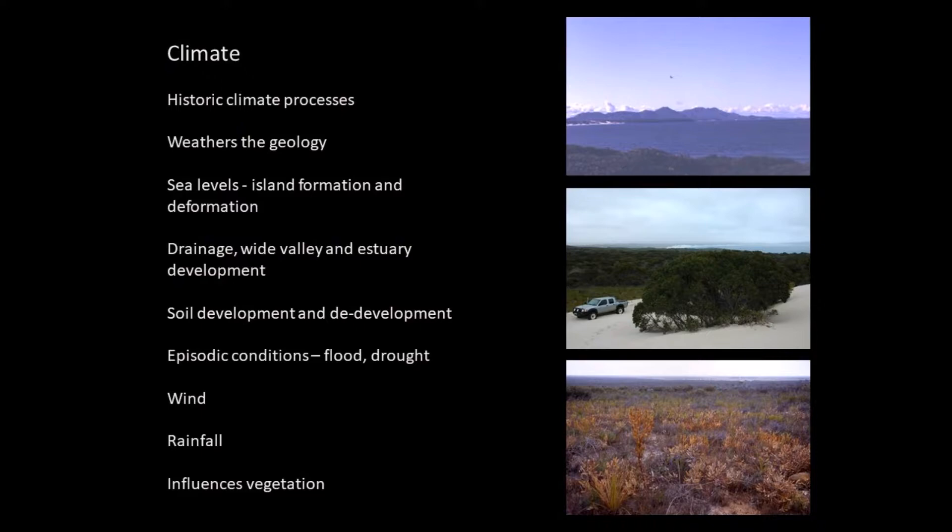Drainage: there's wide valley and estuary development caused by water movement, wind and chemical actions. Soil development into valley floors where gravity and erosion put new soils — mixed soils with nutrients from organic matter and a bit of rock weathering. The inverse is the erosional landscape, becoming skeletal and nutrient poor. Episodic conditions — floods and droughts — have put pressure on biota, either impeding it or supplying energy and breeding opportunities. Wind, rainfall and those things all influence the vegetation.